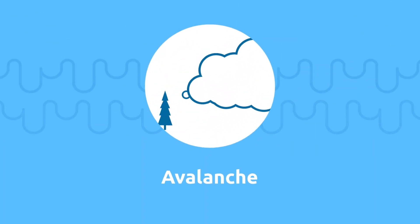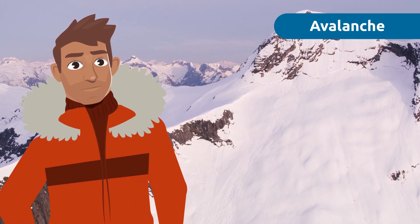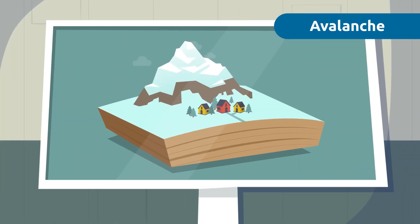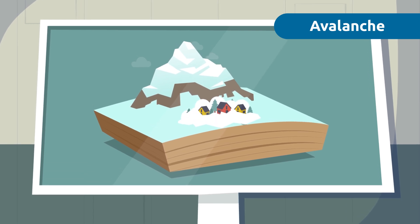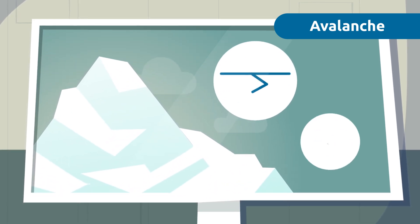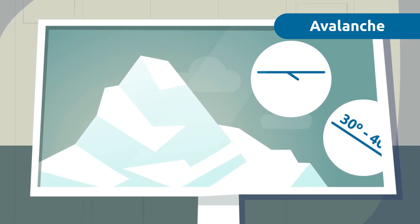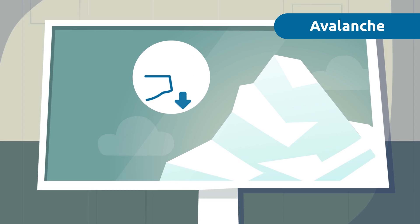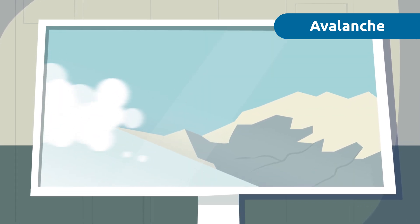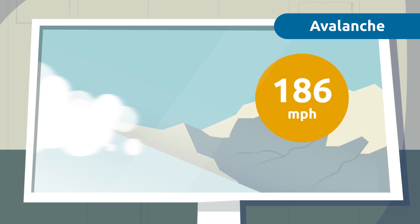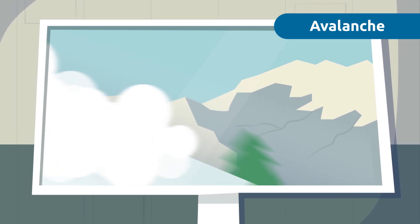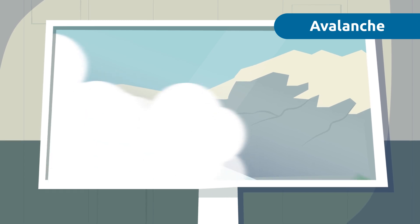Avalanche. An avalanche usually occurs in mountainous areas. It's a huge mass of snow that suddenly slides down a mountainside at high speeds. To trigger an avalanche, there must be an unstable pile of snow and an inclination of between 30 and 40 degrees. A pile of snow can fall off due to gravity or simply an animal's footstep — these are some causes of an avalanche. An avalanche can reach a speed of descent up to 186 miles per hour, sweeping away everything in its path. Avalanches increase in size during their journey because they include not only snow but also vegetation and rocks.